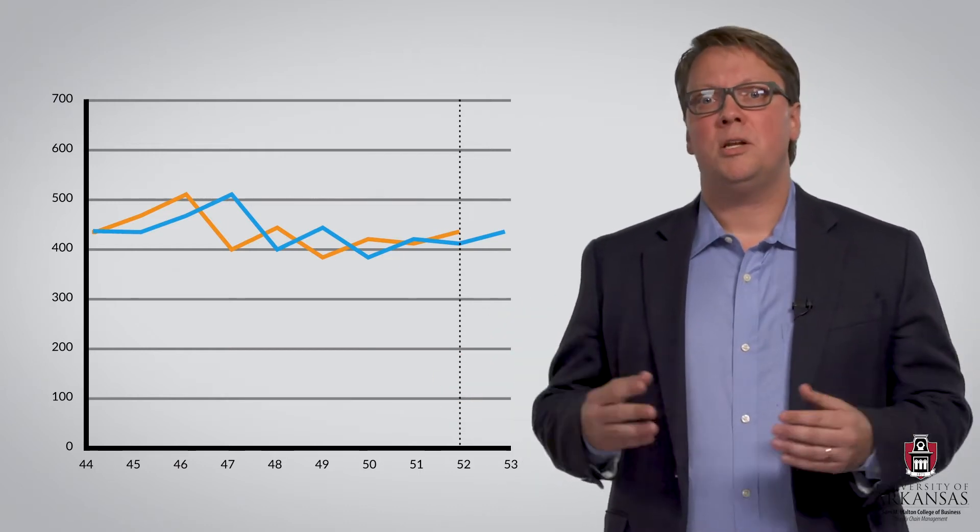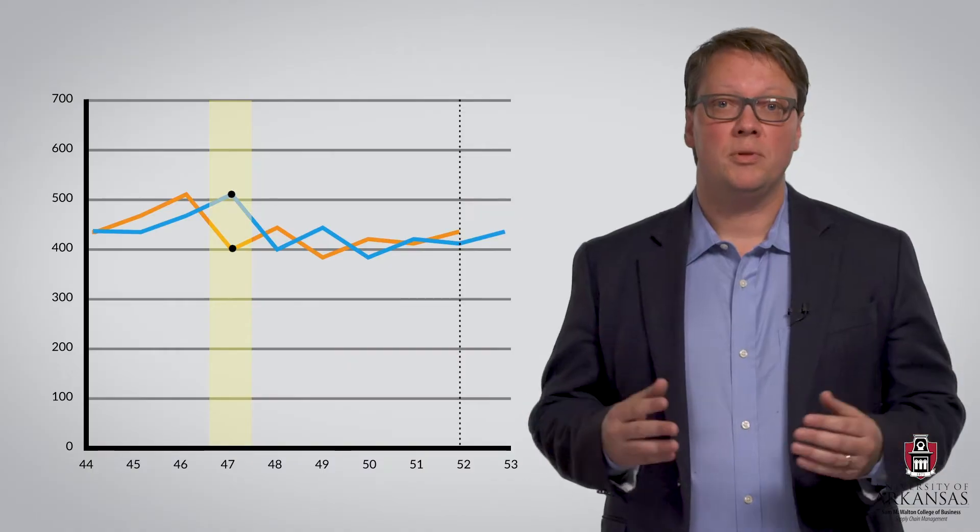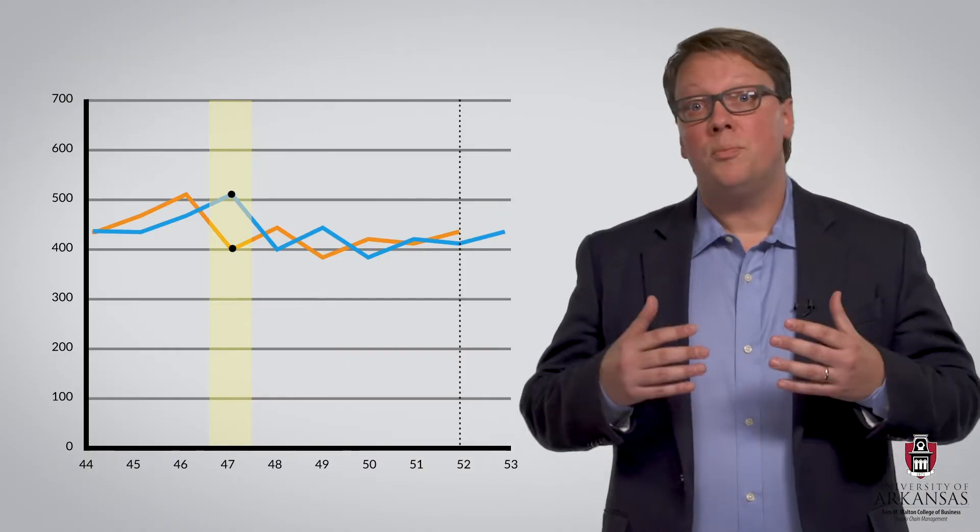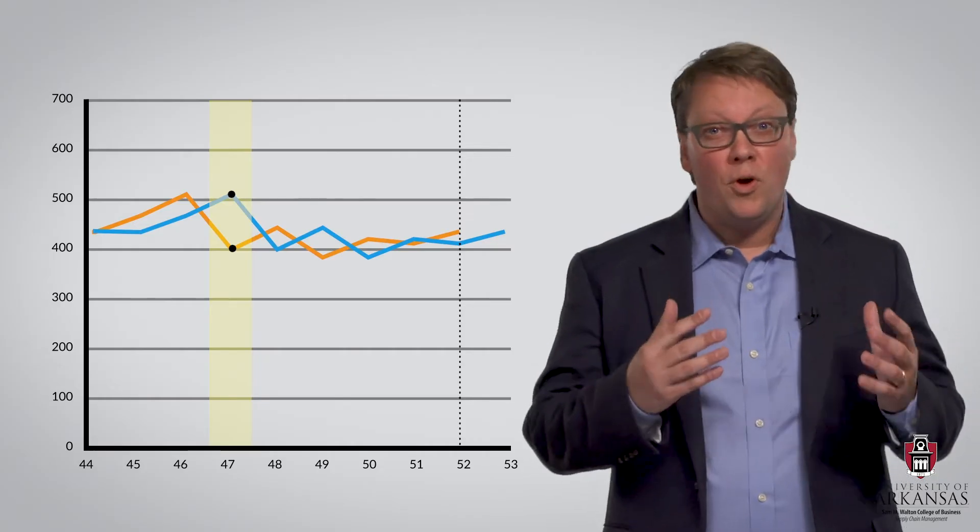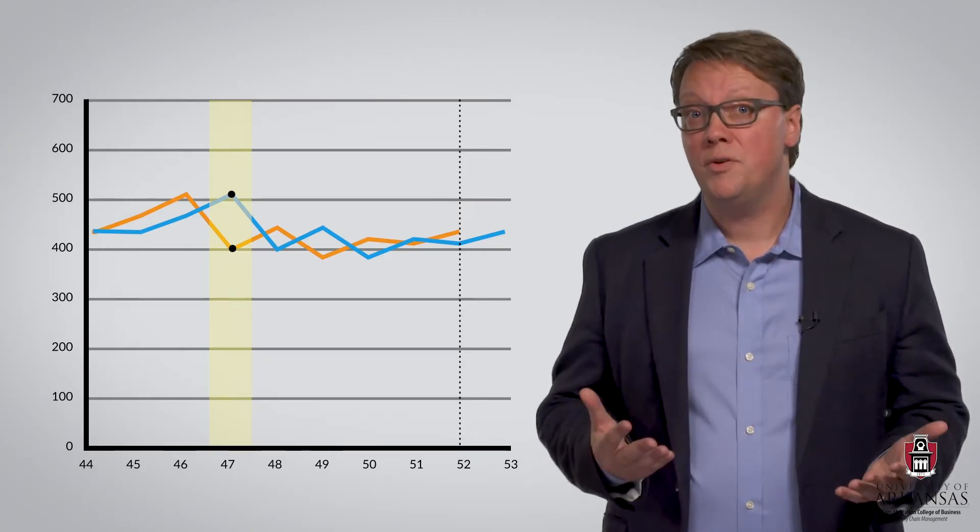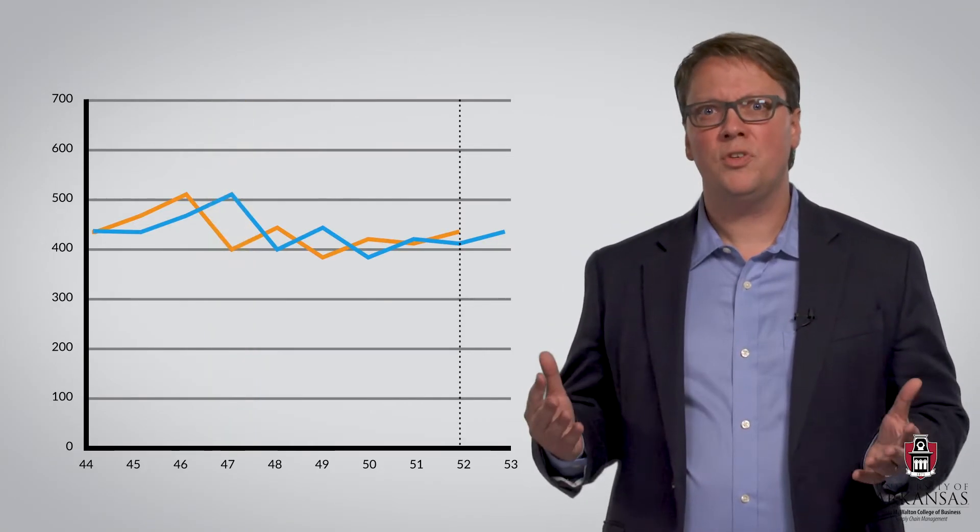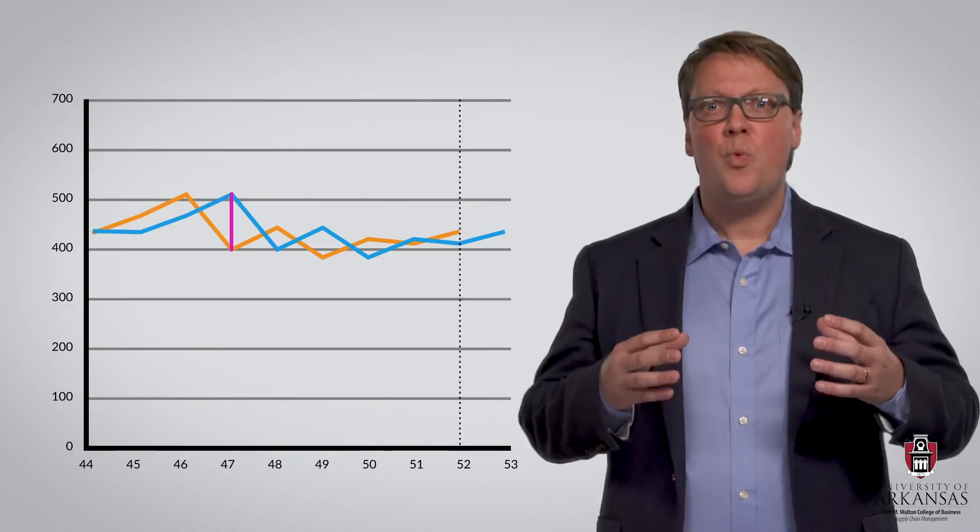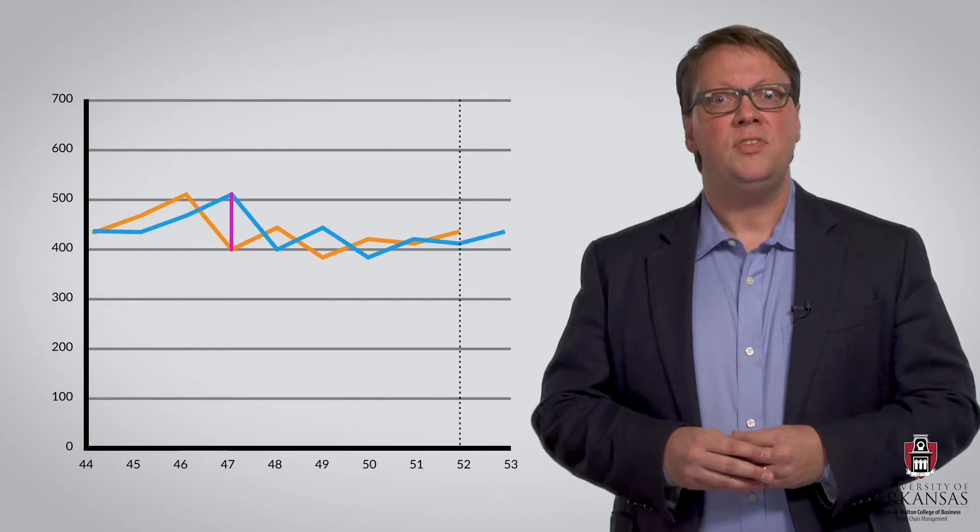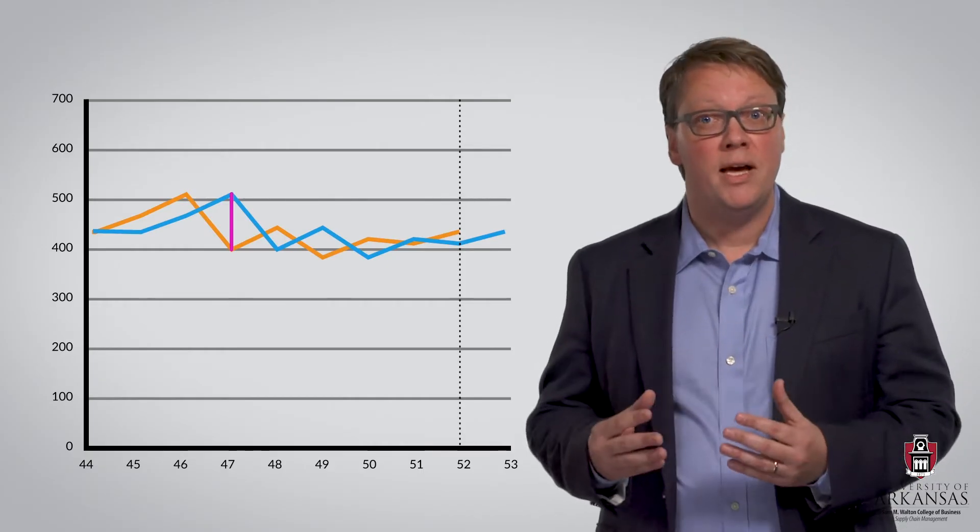Now, let's take a look at period 47, for example. As you can see, observed demand was about 400 units, while the forecast is just over 500 units. In other words, we have a forecast error of about negative 100 units. That is, the difference between true demand and the forecast.